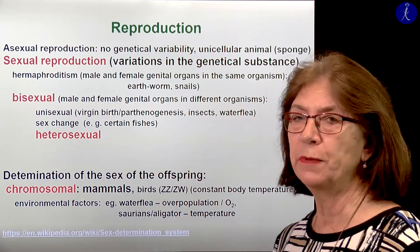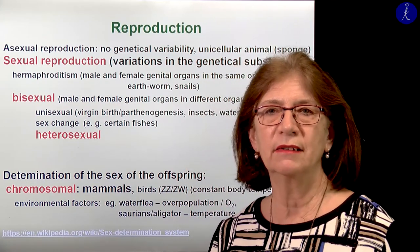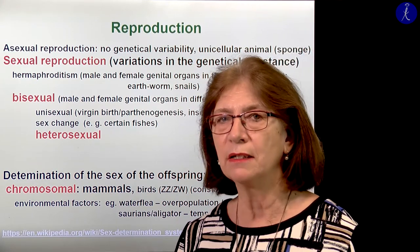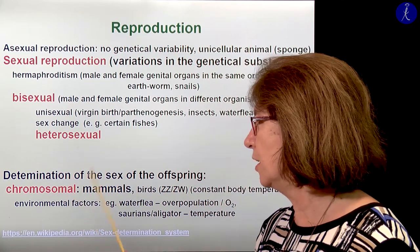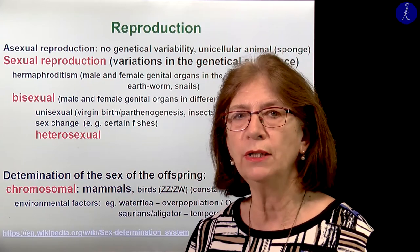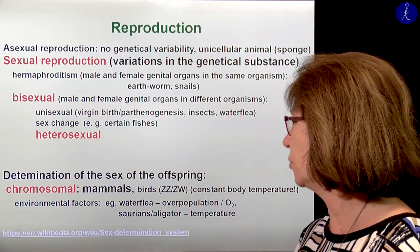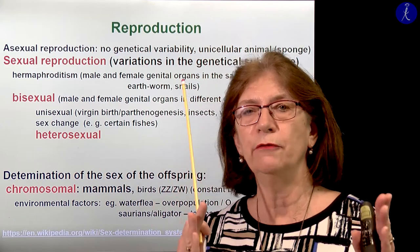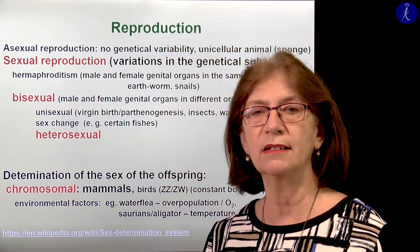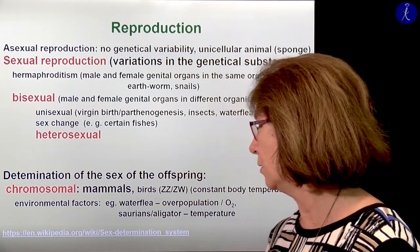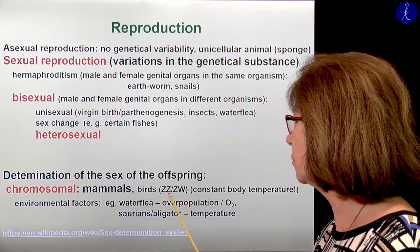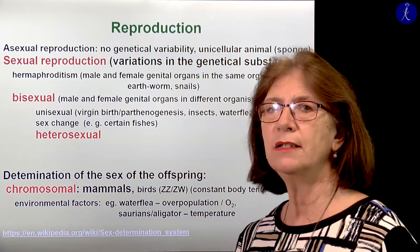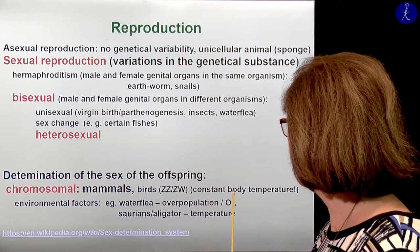Now, the determination of the sex of the offspring. Everyone understands the terms X and Y chromosomes, even those who don't have any medical education. But the chromosomal determination of sex came in evolution only when constant body temperature appeared — like in mammals and in birds. Mammals have, in the female, two similar chromosomes; we call these X chromosomes, and the males have an X and a Y chromosome. In birds it's the opposite: males have two similar chromosomes and the females have two different chromosomes.